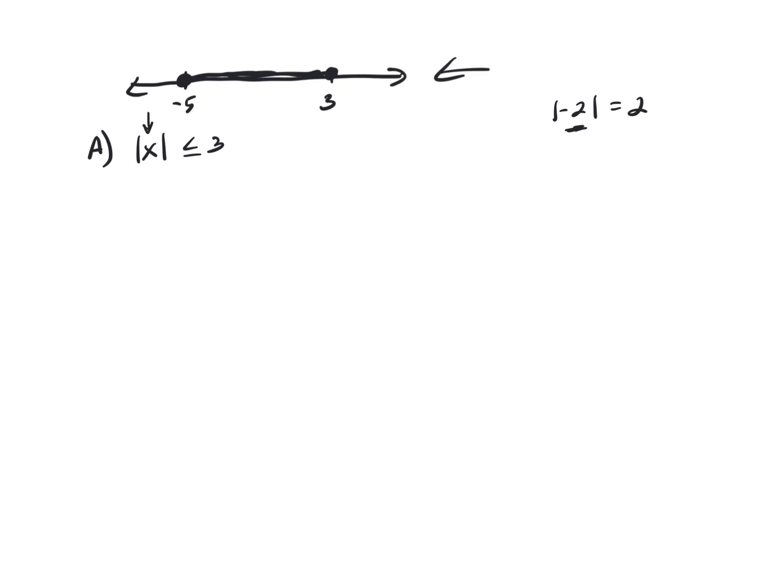So this x is going to be anything in between 3 and negative 3. Think if you plug negative 2 in here, absolute value of negative 2 is 2. 2 is less than or equal to 3. But when you look at this graph, if you were to graph that, that would be every number in between negative 3 and 3 inclusive shaded in between. And that's not what you have here.